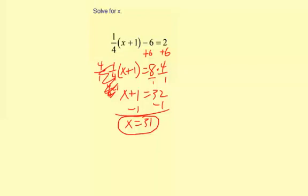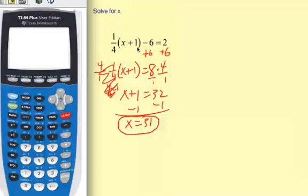Let me check the answer on the calculator. Okay, so I'm going to input just as written: 1 divided by 4, then open parenthesis, and for x I'm using 31, and then plus 1, close parenthesis, then minus 6.